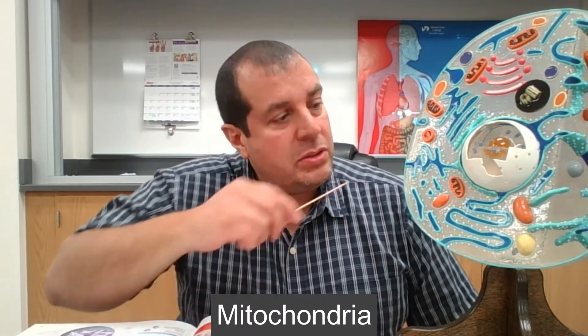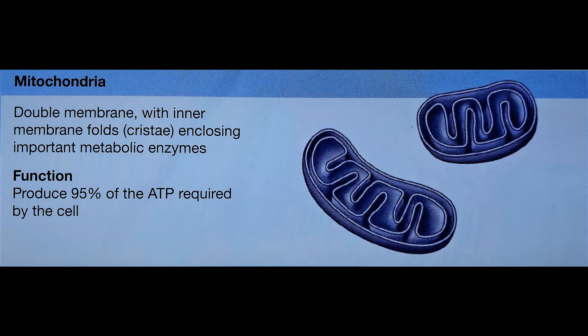Mitochondria is a double membrane with intermembrane folds and cristae enclosing important metabolic enzymes. Its function is to produce 95% of the ATP required by the cell. Without ATP nothing can be done — ATP is the energy that allows organelles to move, cilia to move, and microvilli to absorb. Mitochondria is a membranous organelle.